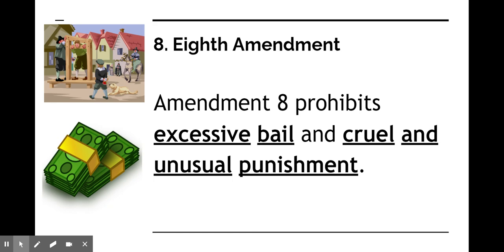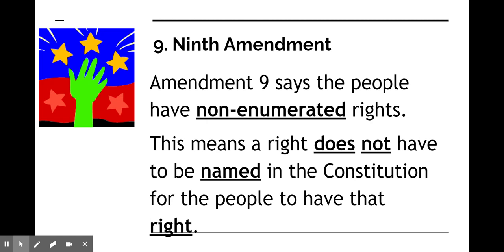The Ninth Amendment says that people have non-enumerated rights — non-enumerated meaning essentially not listed. This is like an insurance policy in the Constitution: it says that if a right isn't listed in the Constitution or in the Bill of Rights, that doesn't mean you don't have it. They included this because they were worried the government would say 'these are all the rights you have and you can't claim more,' so they wanted to ensure that just because a right isn't explicitly stated, it doesn't mean you don't have it.